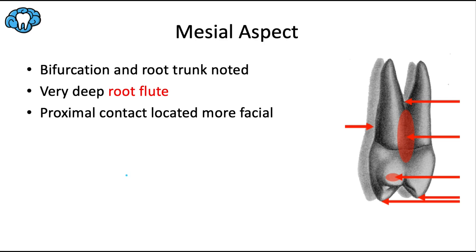Since we're now venturing into posterior teeth, we have multiple roots as the norm. We can see what bifurcation looks like as well as the root trunk — the area between the bifurcation and the CEJ, terms from the very first video. This tooth has a very deep root flute that extends all the way into the cervical third of the crown.